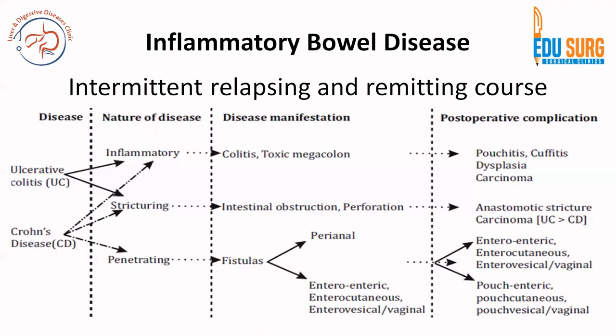The third is the penetrating nature of disease, seen in Crohn's disease. So you can have inflammatory, stricturing, and penetrating natures. The penetrating nature of Crohn's disease leads to fistulas, which can be perianal, enteroenteric, enterocutaneous, enterovesical, or vaginal. Post-operatively, fistulas can again form between two parts of intestine, or between the pouch and the intestine, skin, bladder, or vagina.